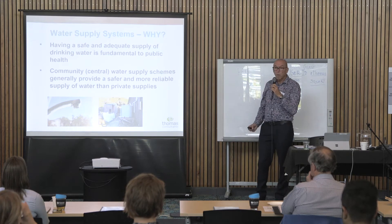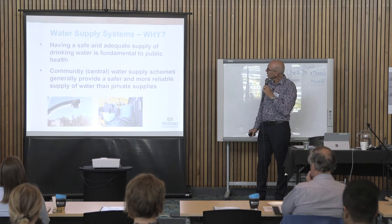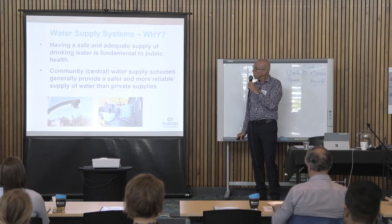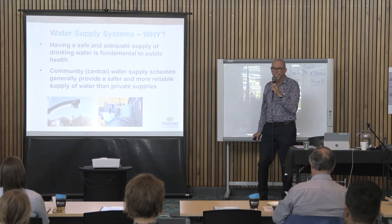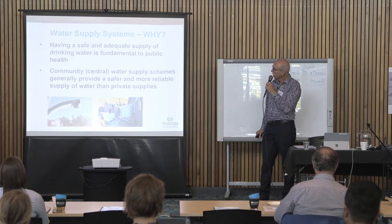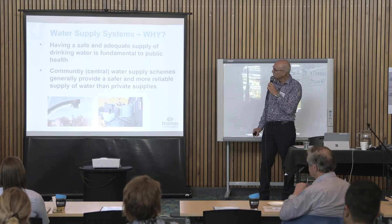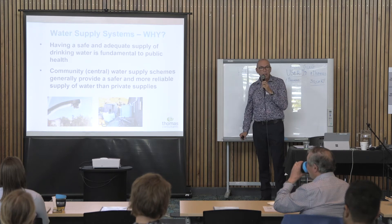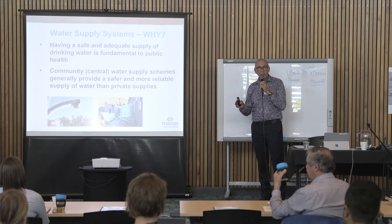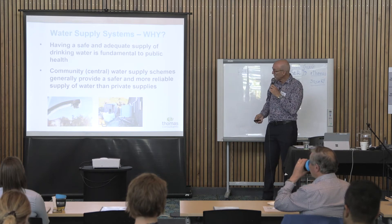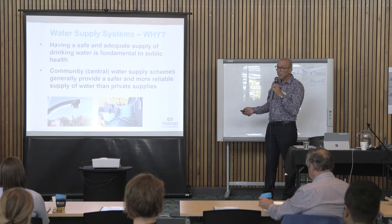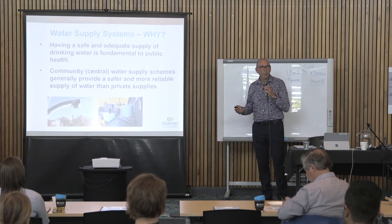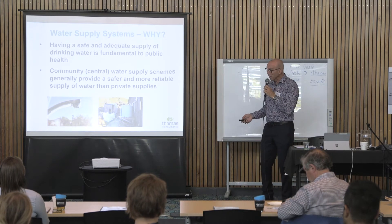So why do we have a water supply system at all? We all know that having a safe and adequate supply of water is fundamental to public health. Community or central water supply schemes generally provide a safer and more reliable supply than private supplies, because you've got large-scale treatment and quality control. Whereas if you've got a roof tank, it's water and you'll probably be okay, but there are possums on the roof — the quality is not really controlled.